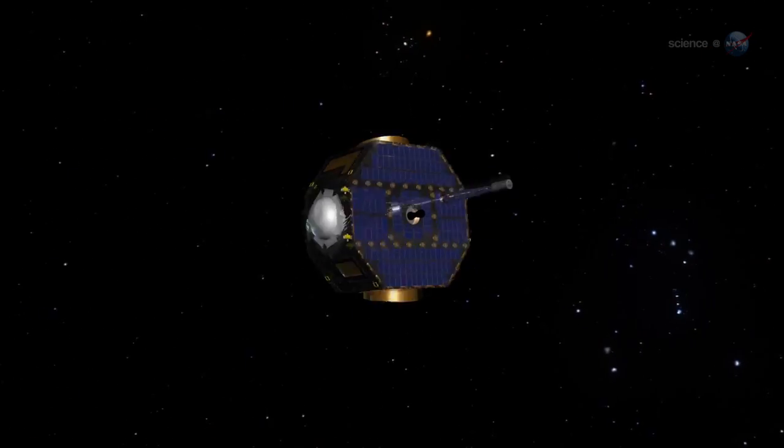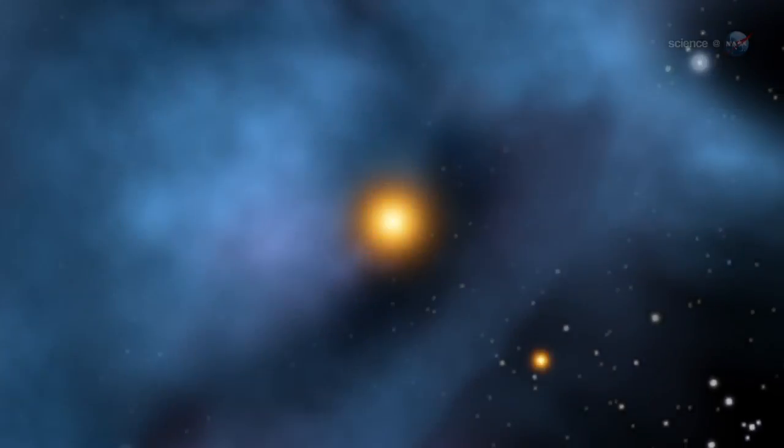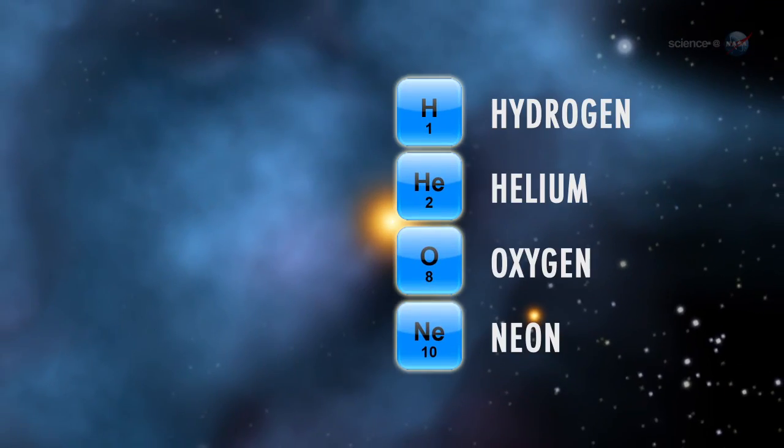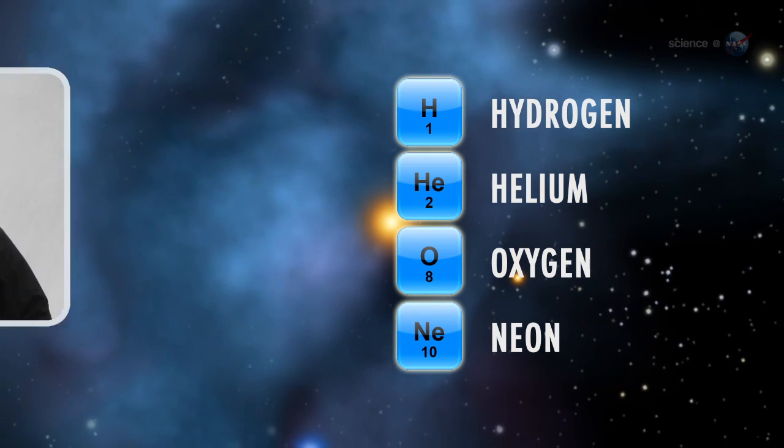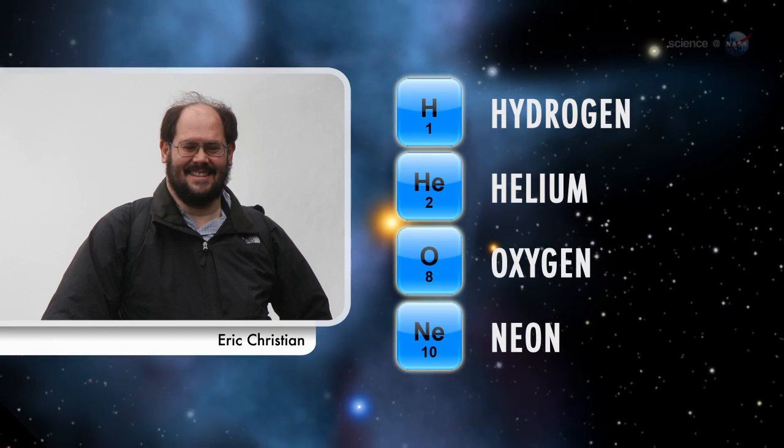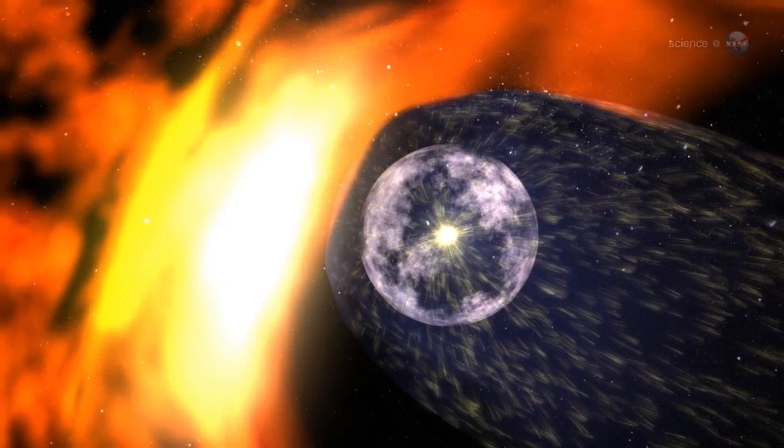The first two years of counting these alien atoms have led to some interesting conclusions. We've directly measured four separate types of atoms from interstellar space, and the composition just doesn't match up with what we see in the solar system, says Eric Christian, mission scientist for IBEX at NASA's Goddard Space Flight Center in Greenbelt, Maryland. In a series of six science papers appearing in the Astrophysical Journal,